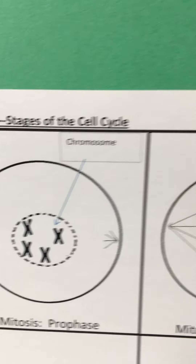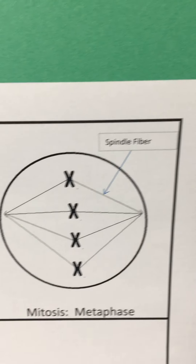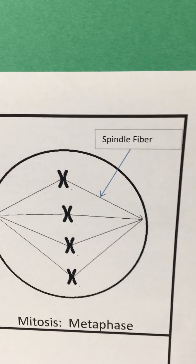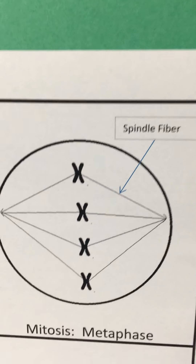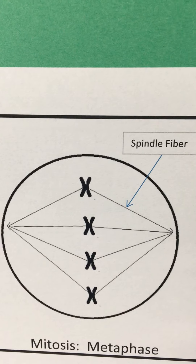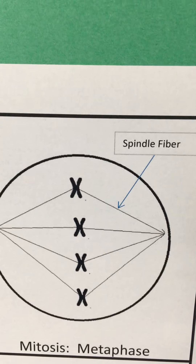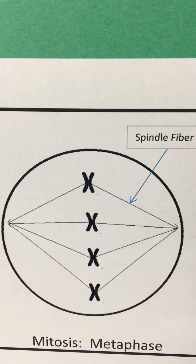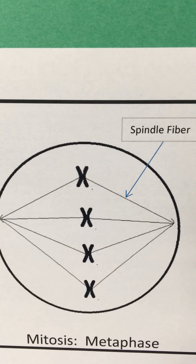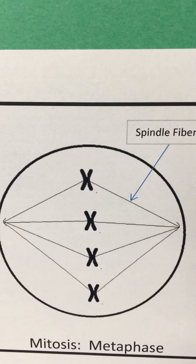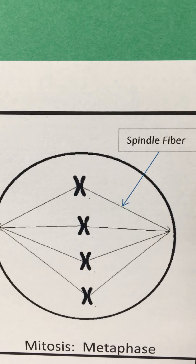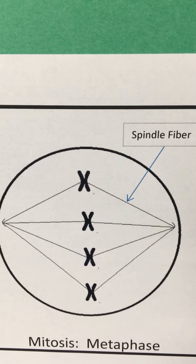After prophase we move into metaphase, where those chromosomes are lining up in the center of the cell down a line, and our spindle fibers are starting to form.